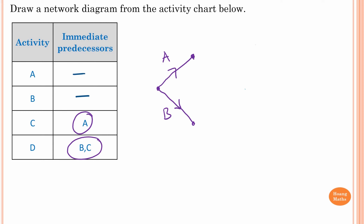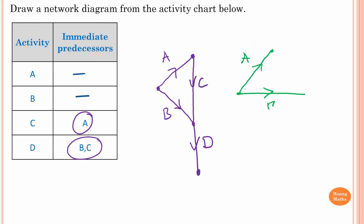Activity C is connected with activity B. For activity D, B and C are immediate predecessors, so I can draw it like this. You can also redraw the diagram — this is A, this is B, this is activity C, and this is D.